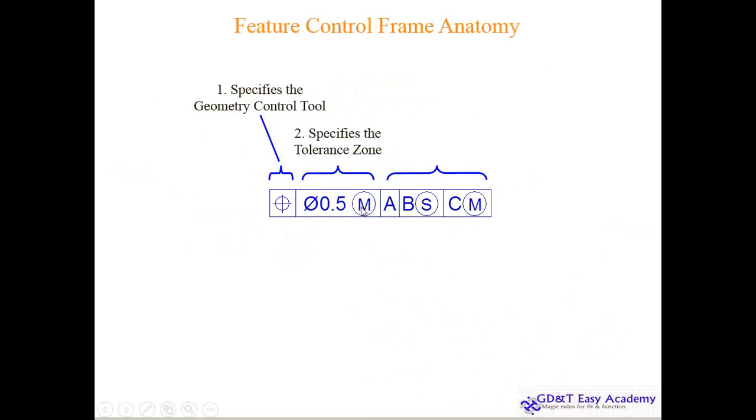This is specifically the maximum material modifier, but this side, this M is not maximum material modifier, this is maximum material boundary because this is datums and this is your tolerance zone. So most of the people they add the tolerance 0.5 to datums and do interpretation. That's what I was talking about, they interpret wrongly.